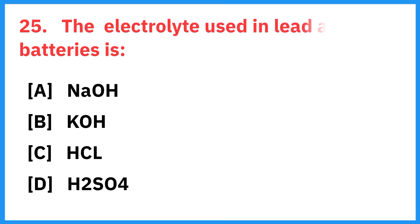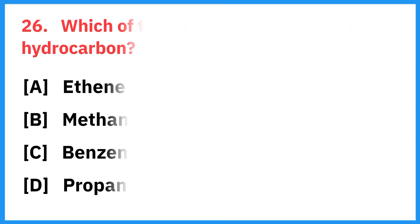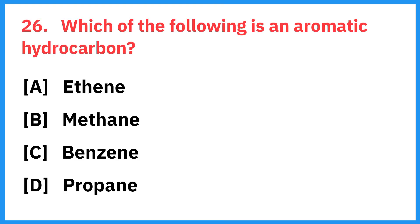The electrolyte used in lead acid batteries is? Correct answer is H2SO4. Which of the following is an aromatic hydrocarbon? Right answer is benzene.